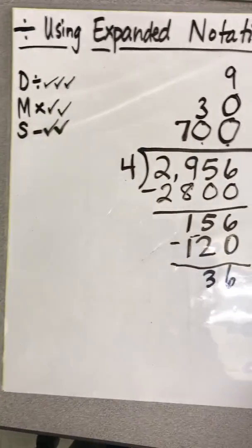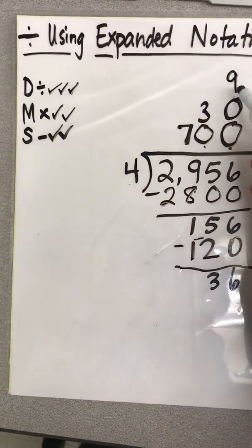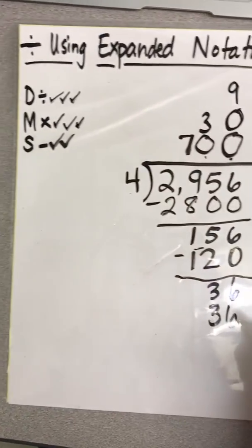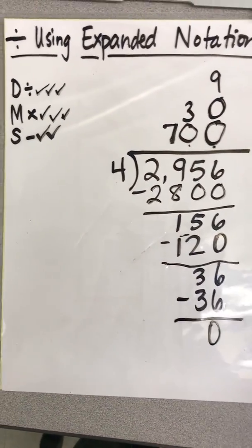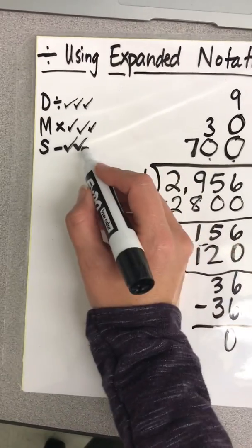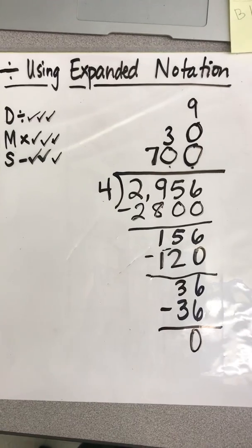And now I'm going to multiply nine times four, which is 36. And I multiplied. And now I'm going to subtract to finish up. And we should end up with a remainder of zero for most of these problems that we are practicing today. And that's the last of the steps.